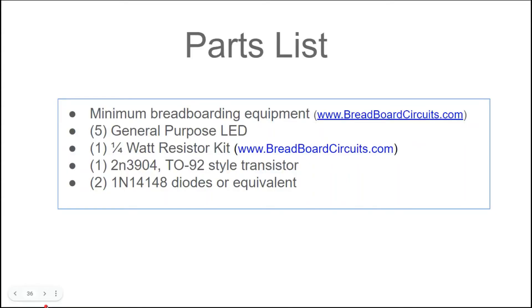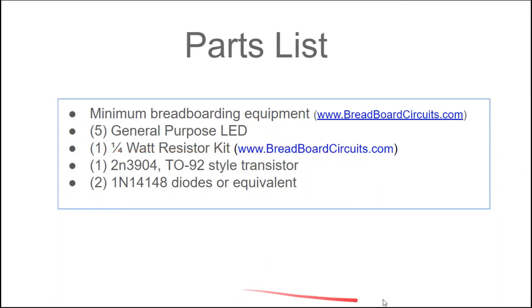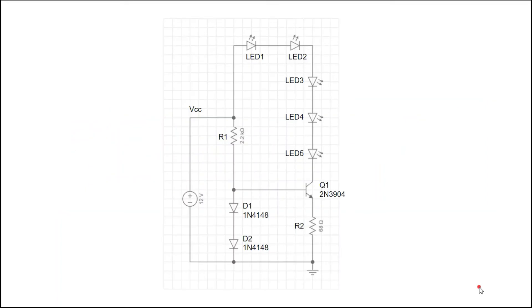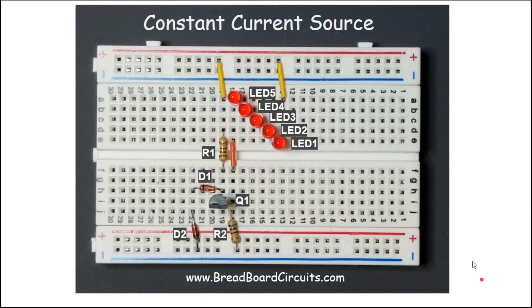That's a simple single-transistor constant current source. If you want to build this circuit, here's the parts list. For minimum breadboarding equipment, go to breadboardcircuits.com for a list of recommended items. A quarter-watt resistor kit is useful for building these types of circuits. Here's the schematic and a picture of the breadboard with components and schematic references superimposed. I hope you found this video interesting and informative — please like and subscribe. For more detail, recommended breadboarding equipment, best practices, and safety tips, visit breadboardcircuits.com.